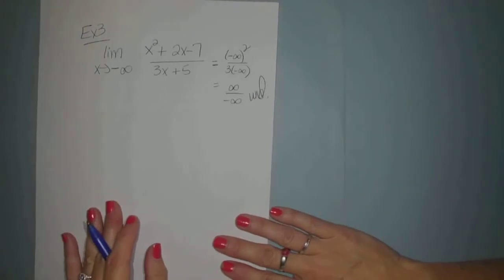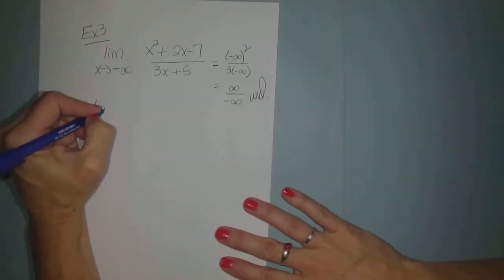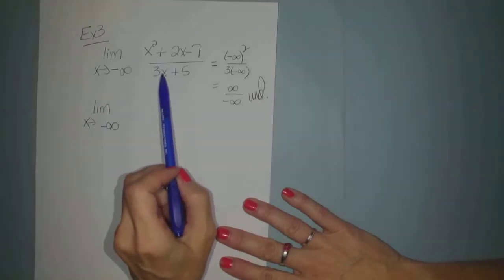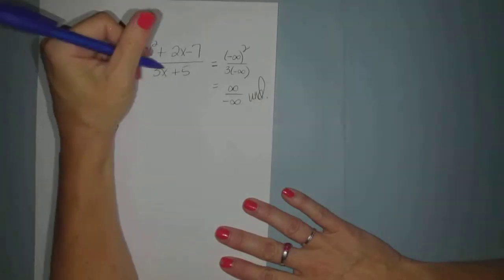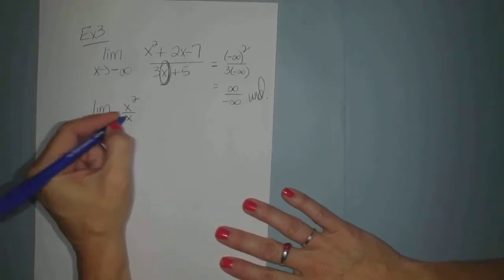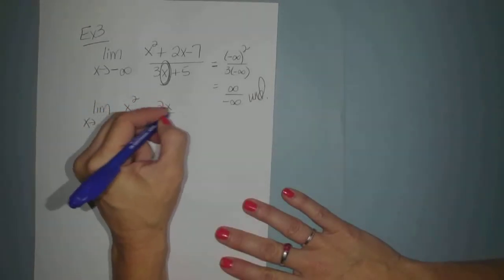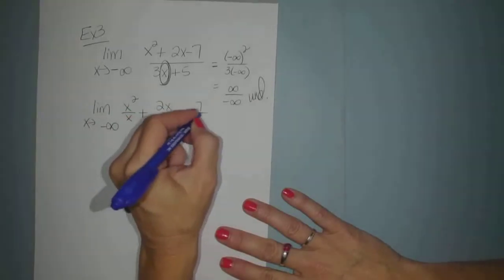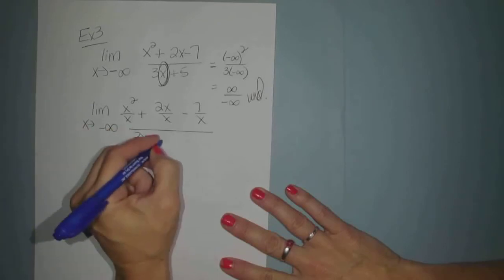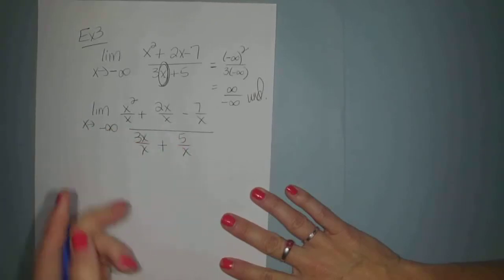So I have to go on to step 2. So I'm going to divide each term by the highest power of x in the denominator, which in this case is just x. So that will be x squared divided by x plus 2x divided by x minus 7 divided by x all over 3x divided by x plus 5 divided by x.